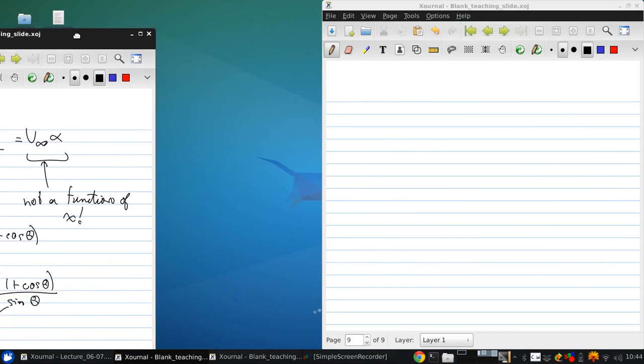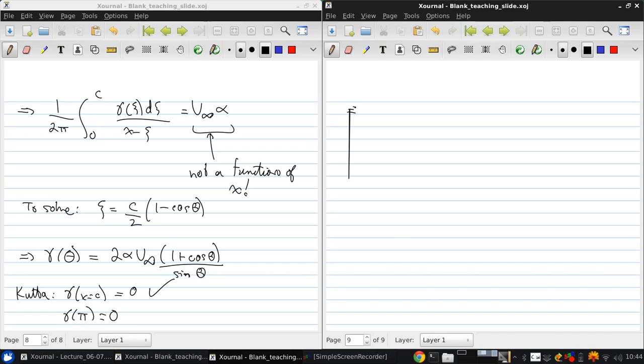So now we can write down the circulation is just the sum of the distribution. So substituting this in and applying the transformation, we get this. So the circulation is alpha c v infinity integral from zero to pi 1 plus cos theta d theta. So the circulation is just pi alpha c v infinity.